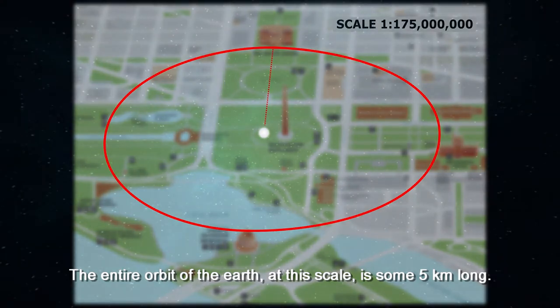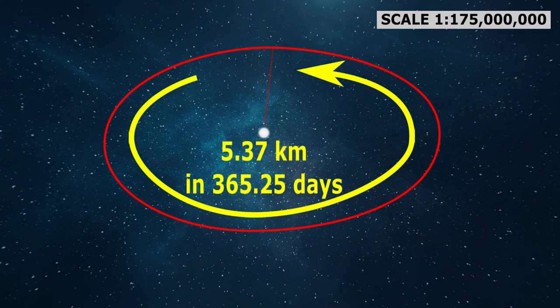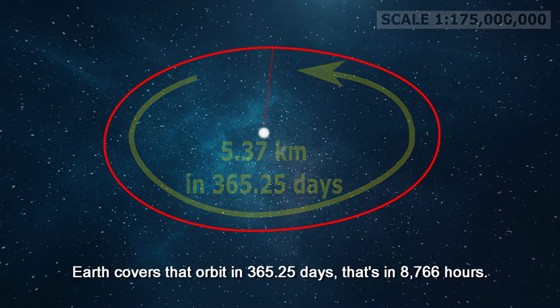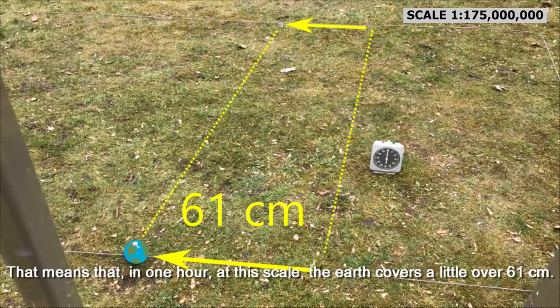The entire orbit of the Earth at this scale is some 5 kilometers long. Earth covers that orbit in 365.25 days. That's in 8,766 hours. That means that in one hour at this scale the Earth covers a little over 61 centimeters.